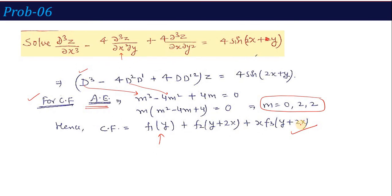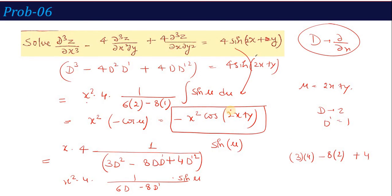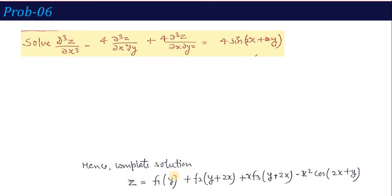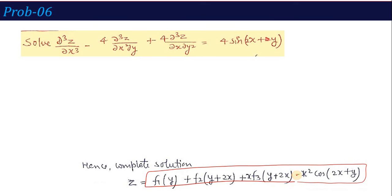The complete solution is CF + PI: z = f₁(y) + f₂(y+2x) + x·f₃(y+2x) - x²cos(2x+y). This final solution is very important. If it is correct you will get full marks; otherwise, step-by-step marking will apply.